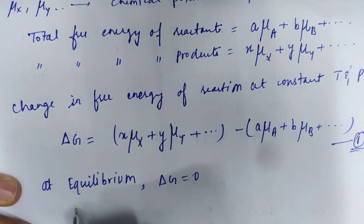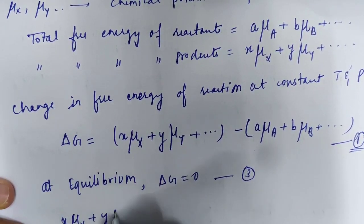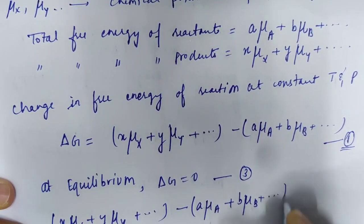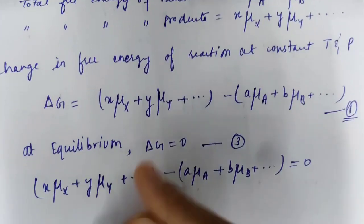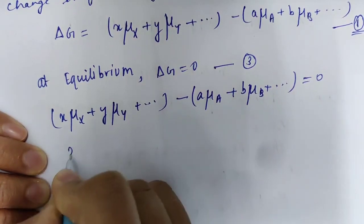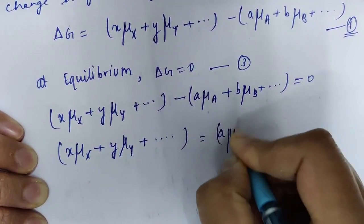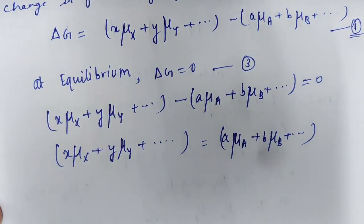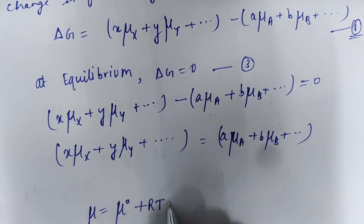At equilibrium, Delta G equals zero. Substituting into equation 1: x(mu X) plus y(mu Y) plus so on equals a(mu A) plus b(mu B) plus so on. This is equation 4. Now, the chemical potential for constituents of a gaseous mixture is given by: mu equals mu naught plus RT ln(a), where a is activity, which can be partial pressure or concentration.